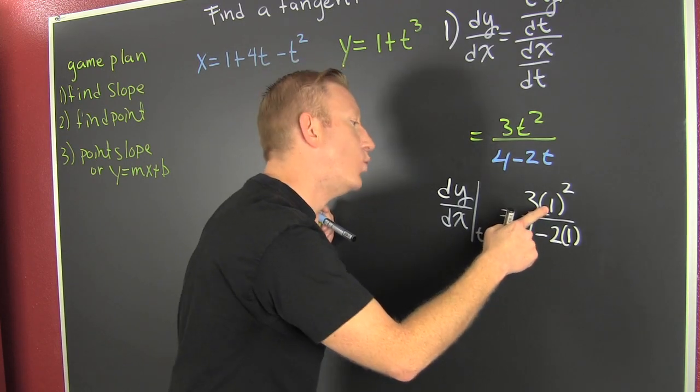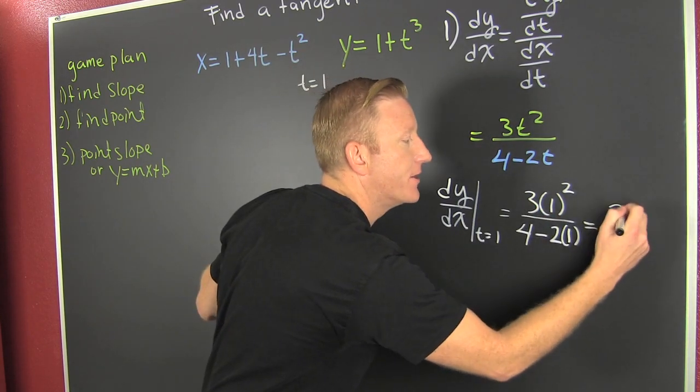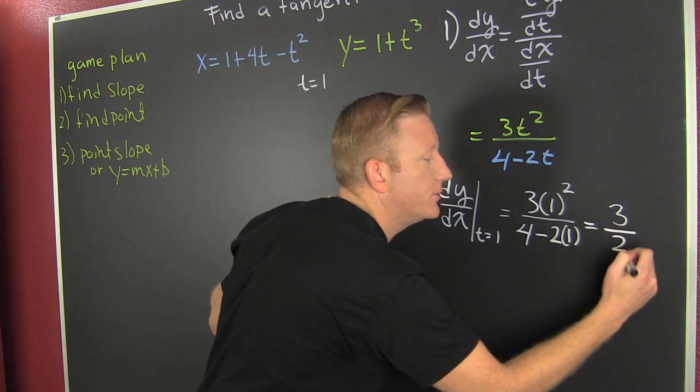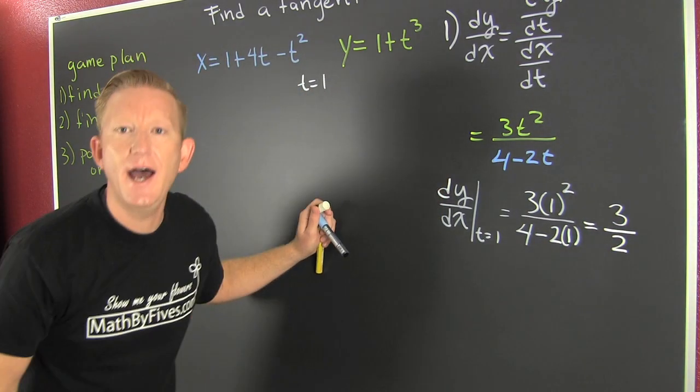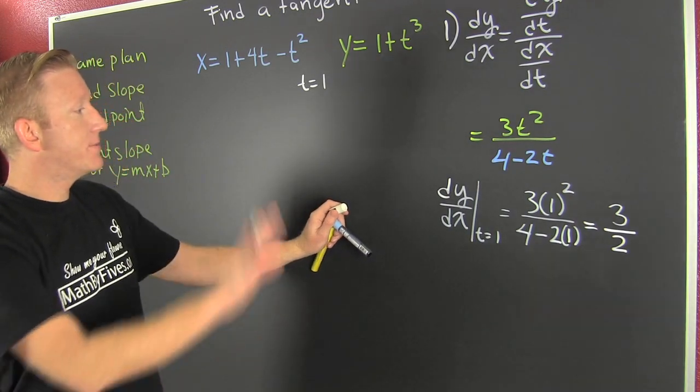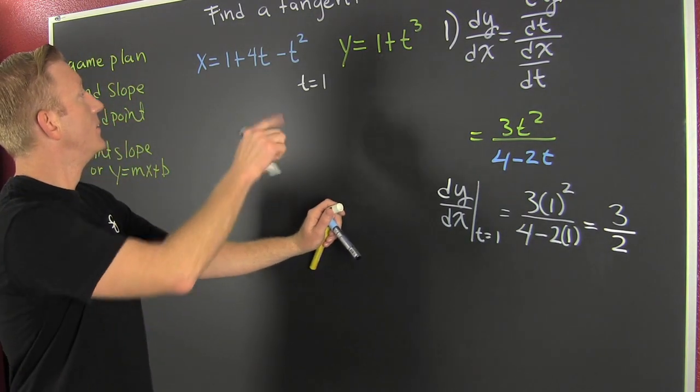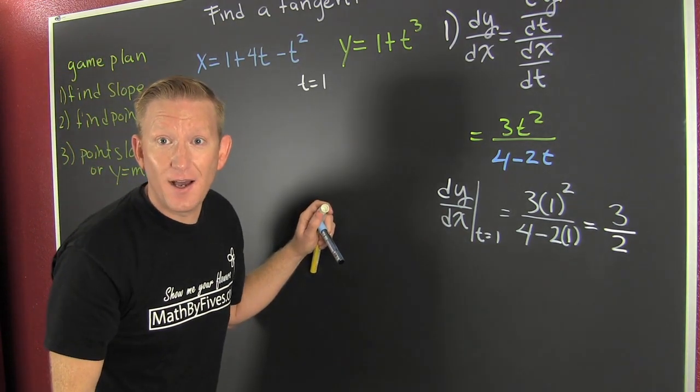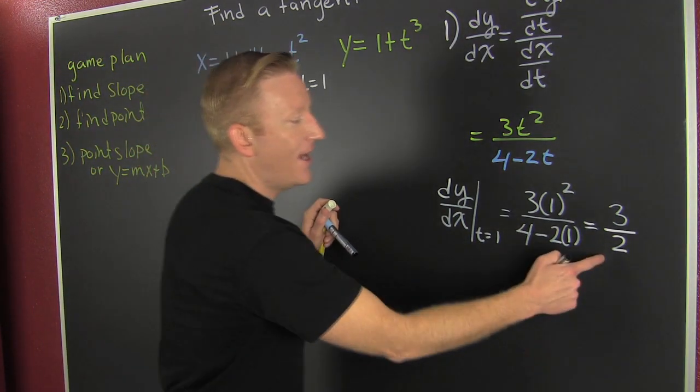4 minus 2 times 1. Up here, 1 squared is 1, and then that's going to be 3. Down here, 4 minus 2, that's 2. So it looks like we're going to have a slope of 3 over 2. It's all all right. Hello, slope.